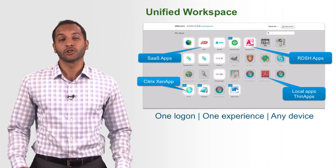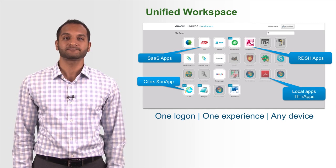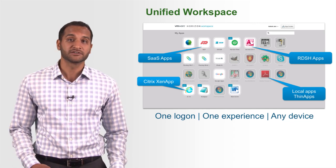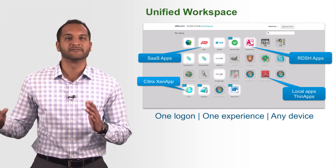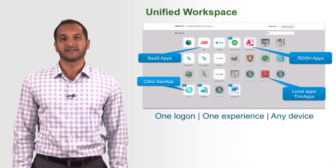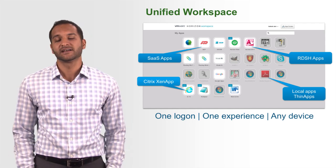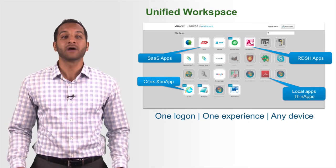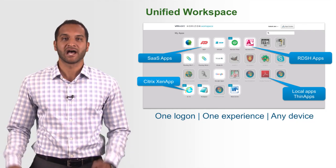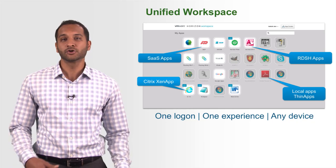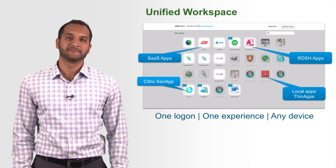The Unified Workspace was another large investment in Horizon 6. Previously known as Horizon Workspace, it has now been integrated into our Horizon 6 platform. The Unified Workspace allows the end user to see all of their applications and desktops from one place — one logon and one experience from any device. Not only do you find things traditionally found in Horizon Workspace such as SaaS applications and local apps like ThinApps, but you'll also find new apps through our Citrix ZenApp integration as well as Horizon Remote App Integration (RDSH apps), providing that single pane of glass that all users want.